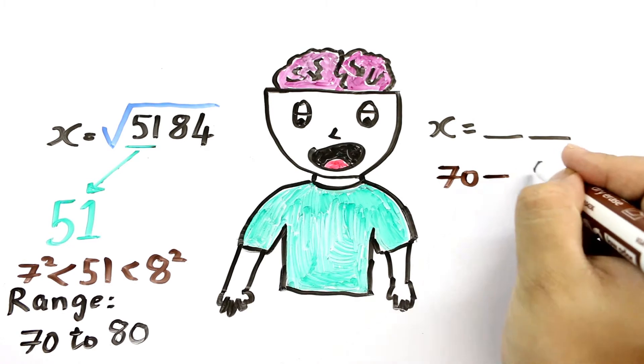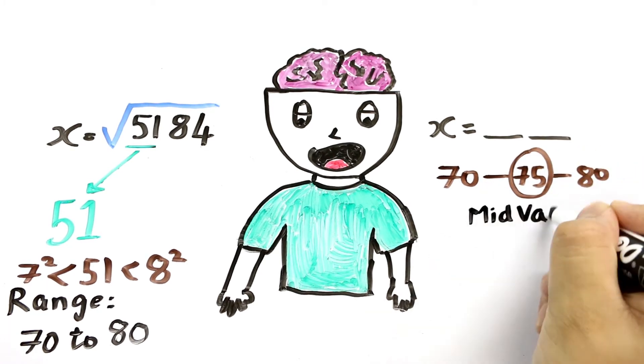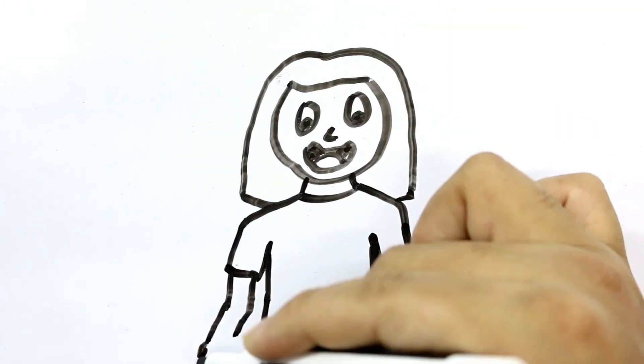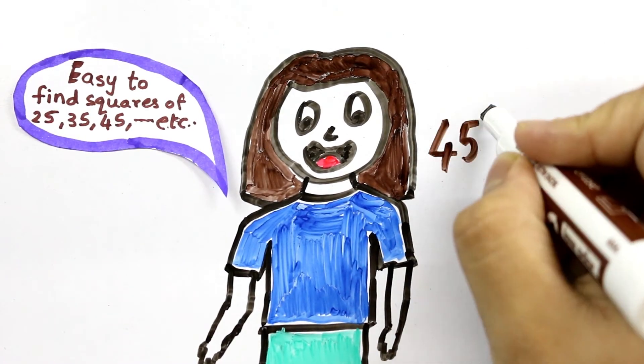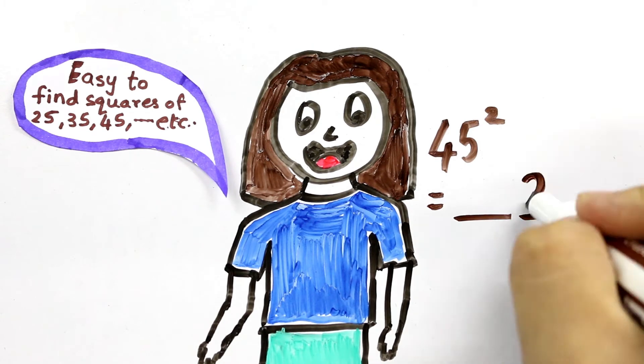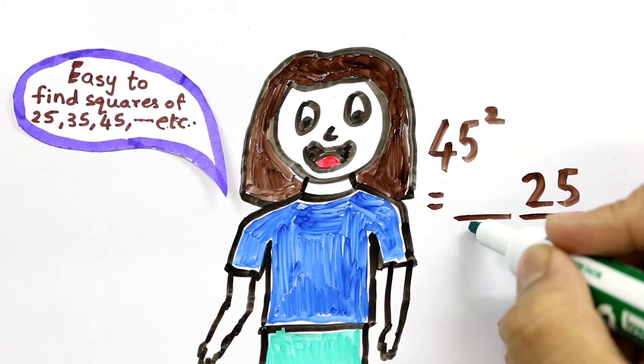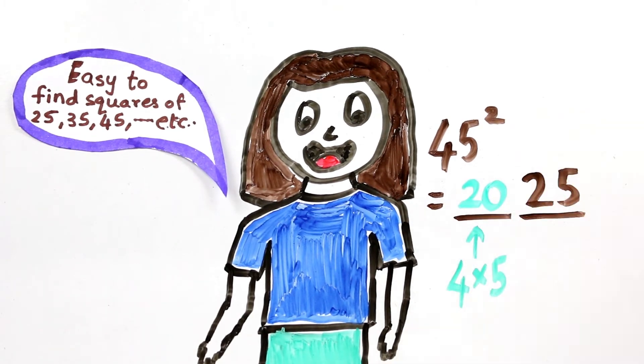Now find out the square of the mid value of this range, which is of course 75 here. Squares of multiples of 5 can be calculated very easily by a shortcut. Always remember that a square of a 2-digit number, which is a multiple of 5, will always have 25 as the last two digits of the square.